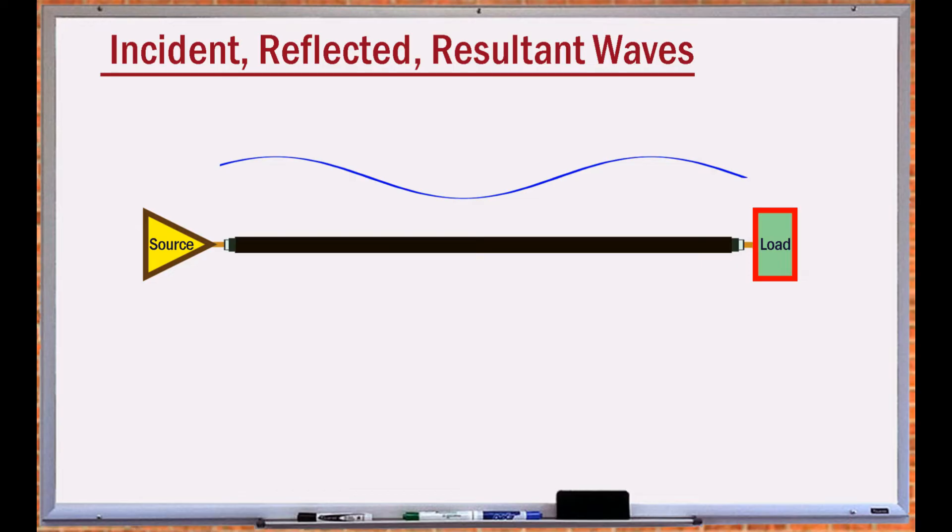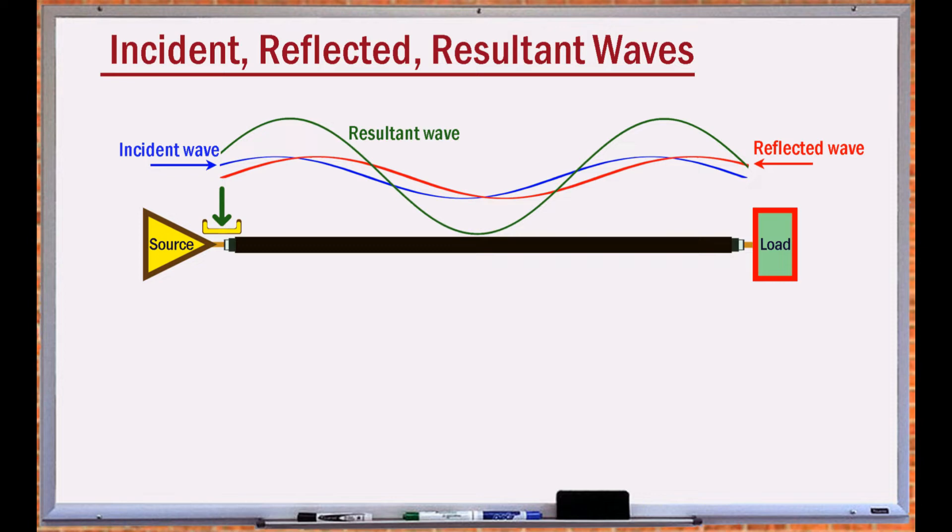When the signal wavelength becomes a significant portion of the cable length, without a proper termination, reflection distorts the signal. The reflected wave changes the amplitude of the signal throughout the cable. At the source, it acts like a load, which if not properly addressed, can damage the signal generator.